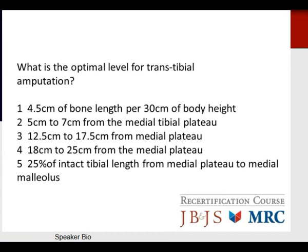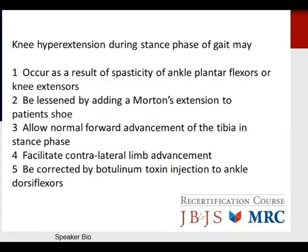Question: What is the optimal level for a trans-tibial amputation? Options include 4.5 cm per 30 cm of body height, 5–7 cm from medial tibial plateau, 12.5–17.5 cm from medial plateau, 18–25 cm from medial plateau, or 25% of intact tibial length. As discussed, you want to preserve at least 12 centimeters of bone. The appropriate response is 12.5 to 17.5 centimeters from the medial plateau.